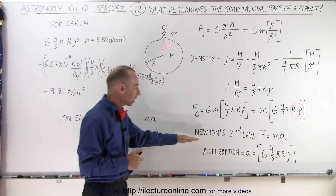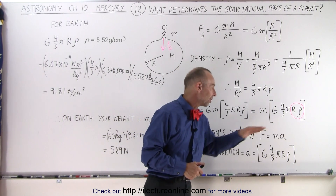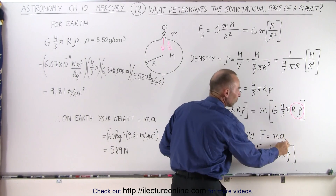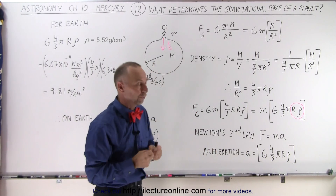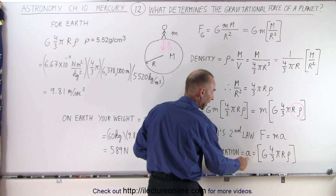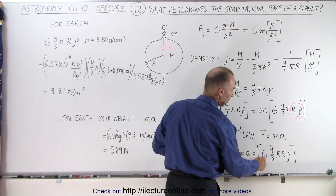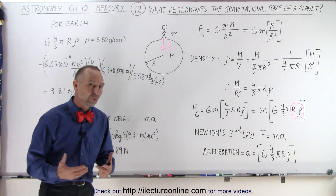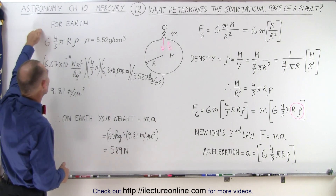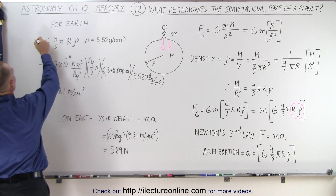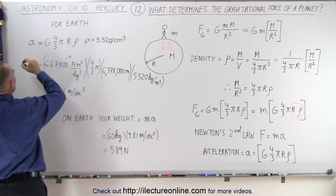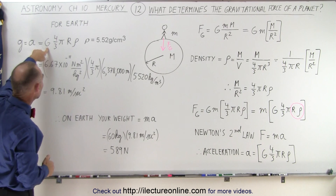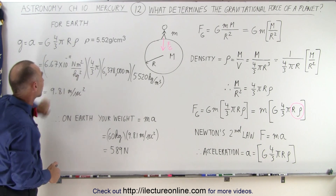If we take Newton's second law — force equals mass times acceleration — and compare it to our gravity equation, we can see that the bracketed quantity corresponds to the acceleration due to gravity on the surface of the planet. So the acceleration on the surface of the planet is simply g times four-thirds pi times the radius of the planet times the density of the planet.